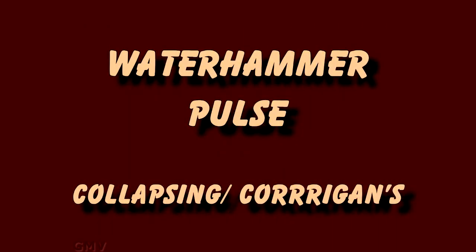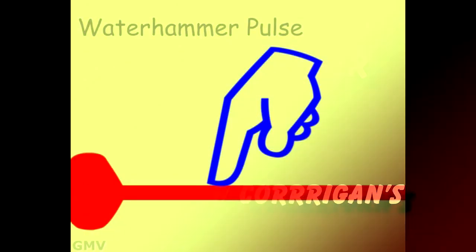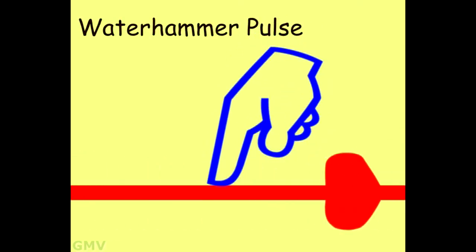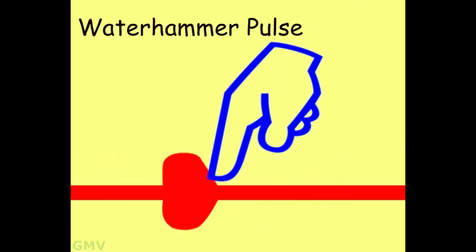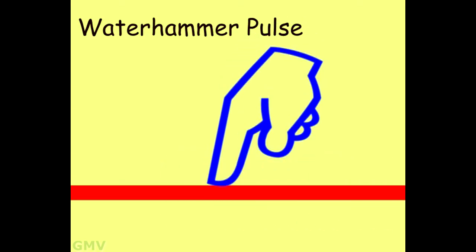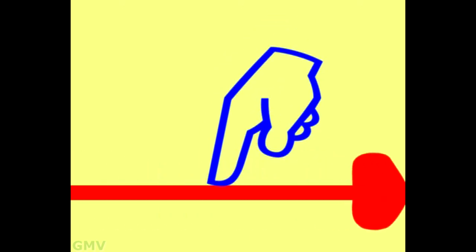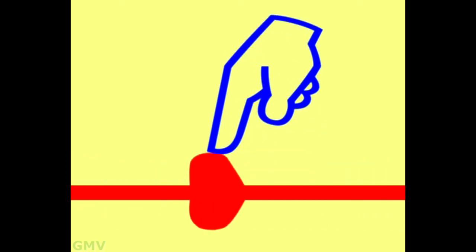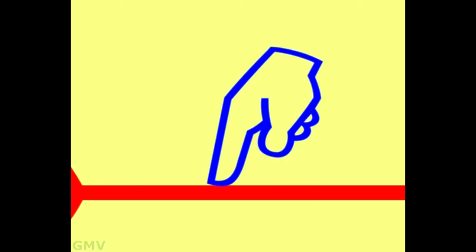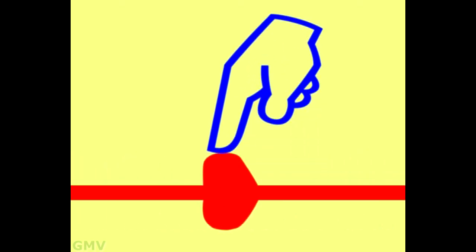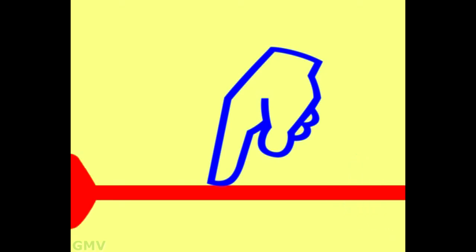An extreme of bounding pulse is water hammer or collapsing pulse or Corrigan's pulse. A very quick rising and quick falling pulse, it is best felt in the forearm with arm raised and is seen in severe aortic regurgitation. Note the rapid upstroke and immediate rapid descent. This is the collapsing or water hammer pulse.